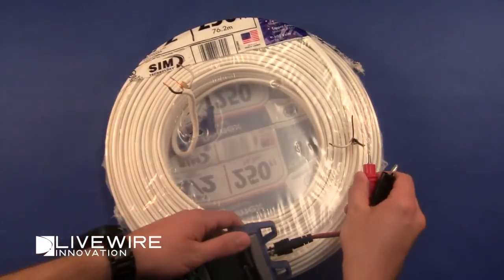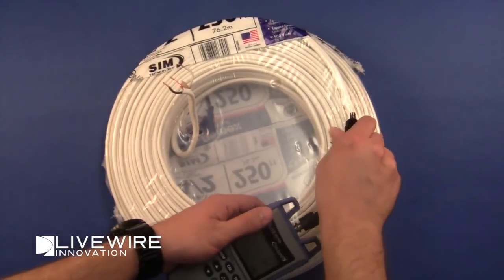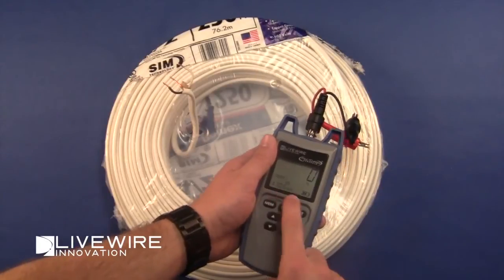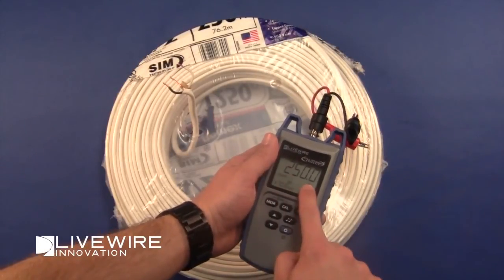We're going to detect the length of this 14.2 Romex. We attach the Fault Chaser to the cable and have already selected the known NVP value of 70.6. It tells us that the length of this cable is 250 feet.